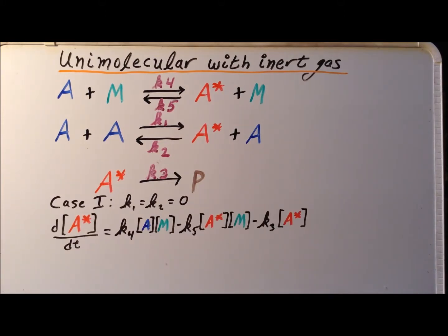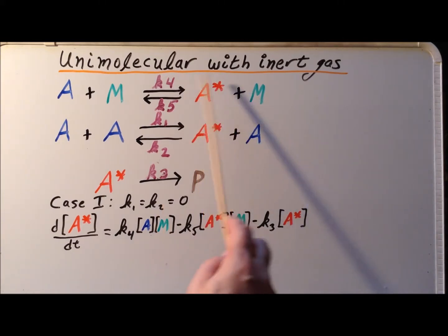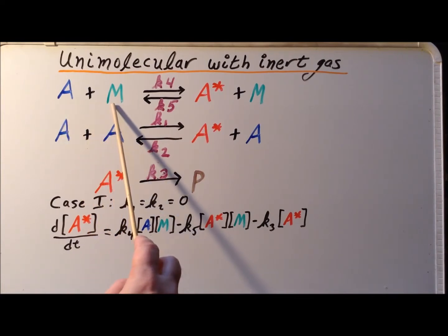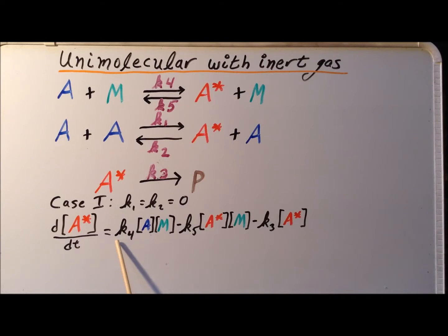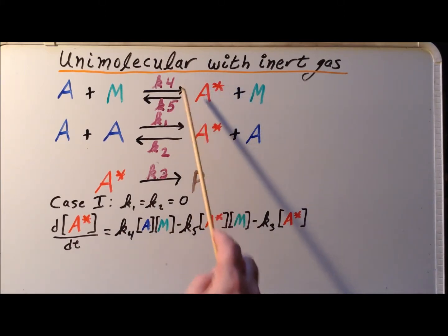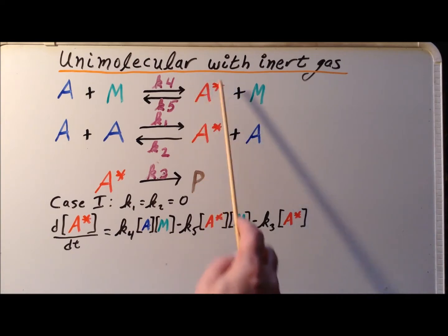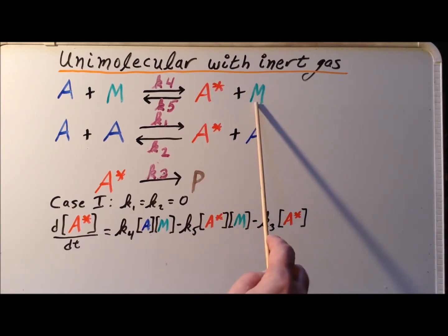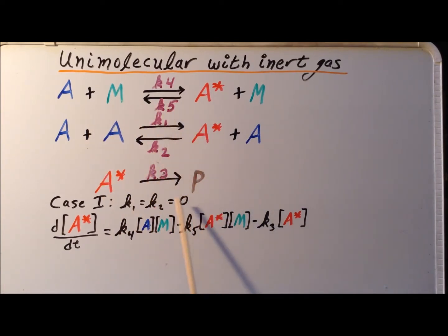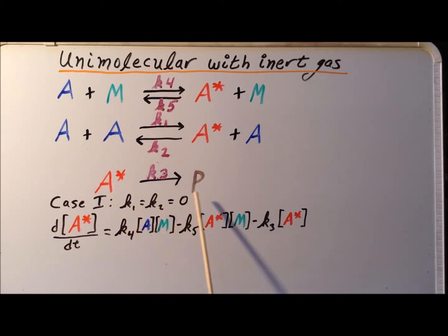We proceed by writing an expression for the change in the concentration of red A star, the activated complex. We can form A star by the reaction of A and M with rate constant K4, giving a positive K4 times [A] times [M]. There are two ways of reducing the concentration of A star: collisional deactivation of A star reacting with M with rate constant K5, giving minus K5 times [A*] times [M]; and the conversion of A star into product P, which depends on [A*] with rate constant K3.